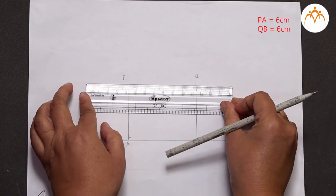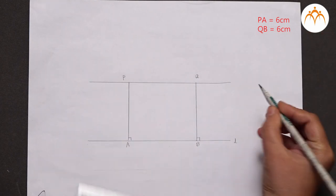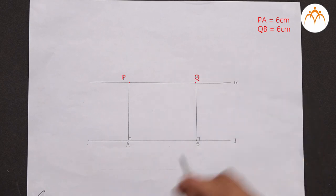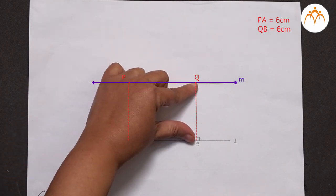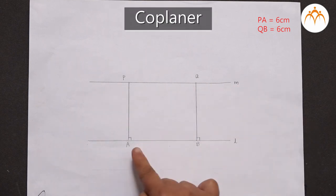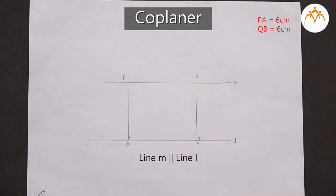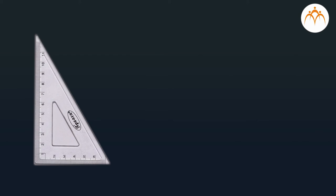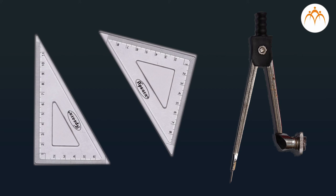We draw a single line passing through points P and Q and name this line as M. In this case, line M is at equal distance PA or QB from line L, and both these lines lie in the same plane. Hence, line M is parallel to the given line L. As you have seen, we have used a set square to draw a perpendicular on the given line. Instead, you can also use a compass to draw a perpendicular, which you have already studied in the previous standard.